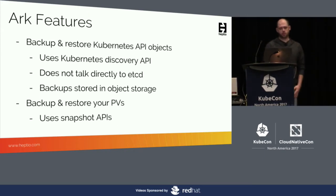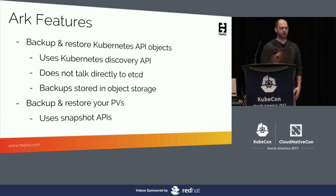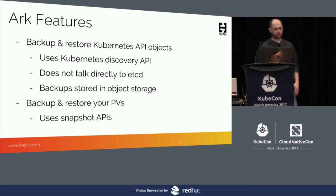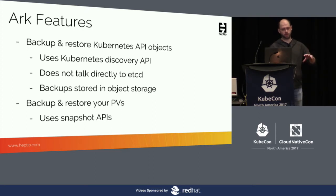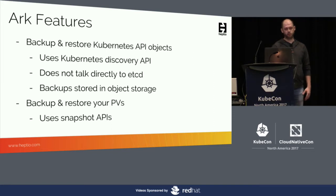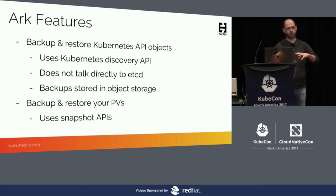Heptio Arc has two core features. The first is that it enables you to back up and restore your Kubernetes API objects. We use the Kubernetes discovery API for accessing all of that information and creating backups of it, as well as restoring it in the case of a disaster.